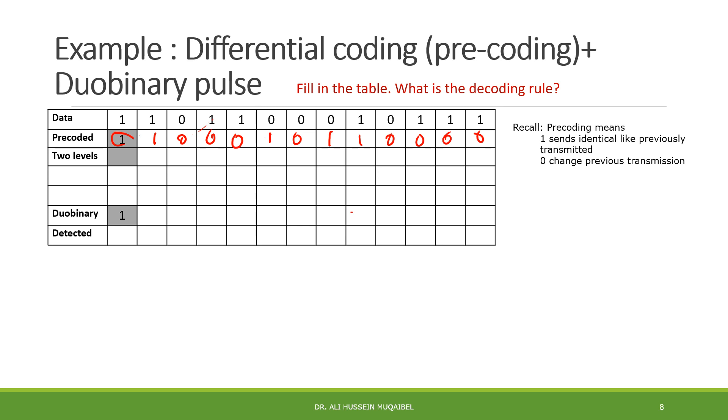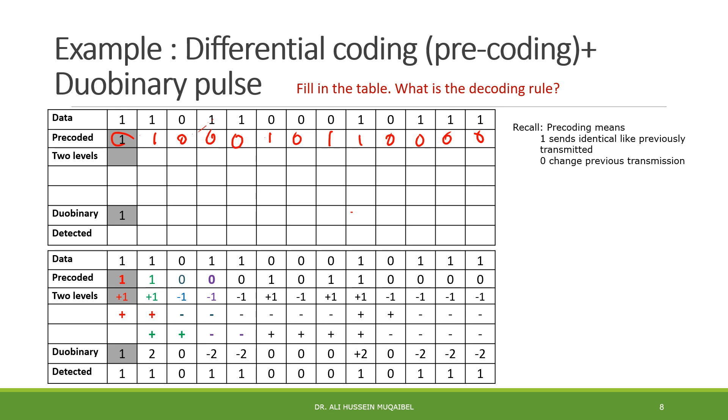Now everything will become the same as before for the two-level. This is exactly this. What comes next is two-level. Now, I will not work with the data, I'll work with the pre-coded data. So, one will be positive, zero will be negative. And now, when the duobinary, how do you find the duobinary? Zero, because we have plus one and minus one. Zero, because we have minus and plus. Why we have two here? Because we had plus and plus. So, the duobinary, add the current polarity with the previous one to find the voltage. The receiver is going to receive this.